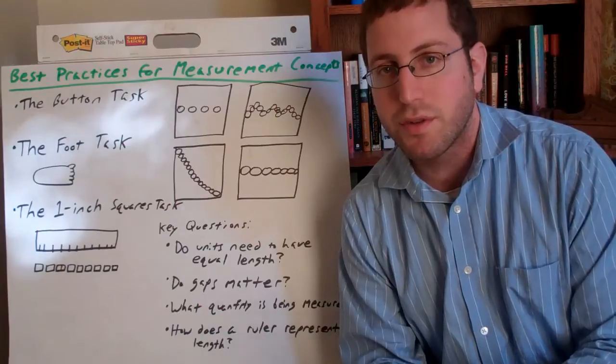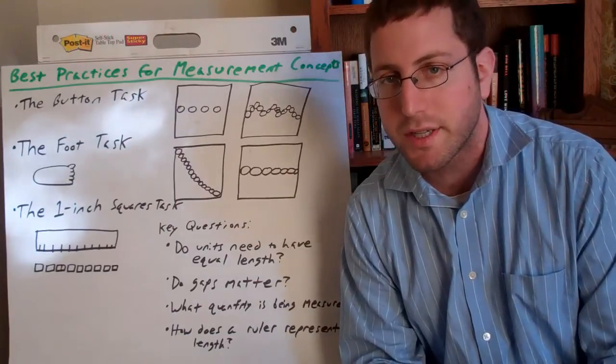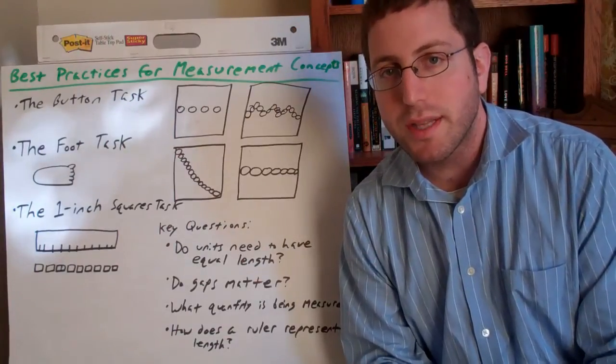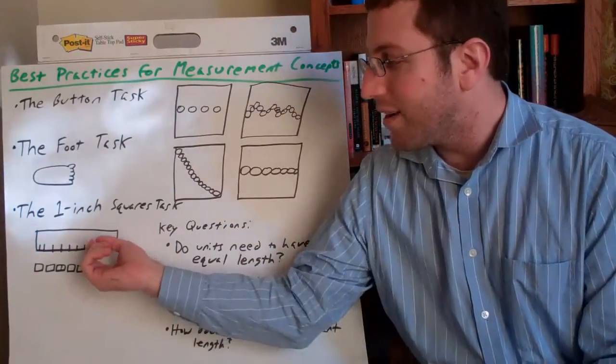can be a surprisingly frustrating and difficult thing for students to understand. And what this means is that the teacher starts in the front of the classroom by measuring an object, just an everyday object, with a ruler.